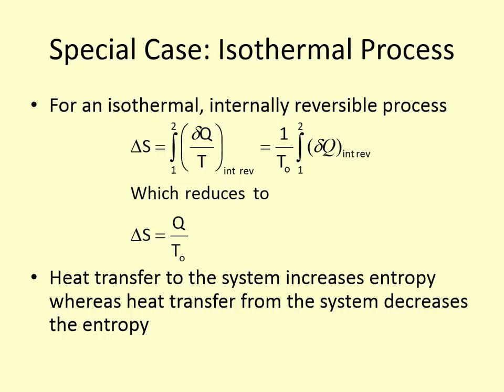For a special case where the system is isothermal and the process is internally reversible, we can take the temperature outside the integral and just integrate δq, giving ΔS = Q/T₀, where T is the temperature of the system boundary. If it's an isothermal system undergoing a process with heat transfer, the change in entropy is simply the heat transfer divided by the temperature of the system.